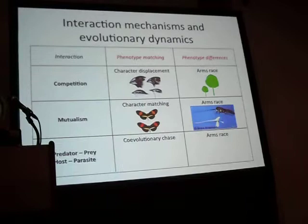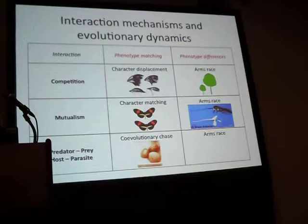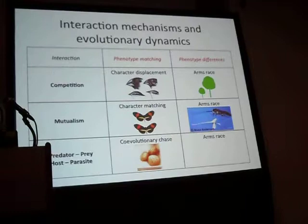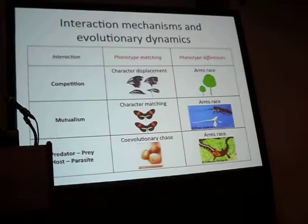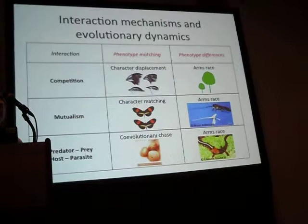With consumer-resource, predator-prey, and host-parasite interactions, you can also see these two different mechanisms at play. For example, with cuckoos and their hosts, there's a co-evolutionary chase in egg phenotype — the cuckoo does best if its egg matches the host, the host does best if it mismatches. And once again, arms races are also possible, where toxic prey does better if it's more toxic than the predator can detoxify, and the predator does better if it can improve its detoxification.